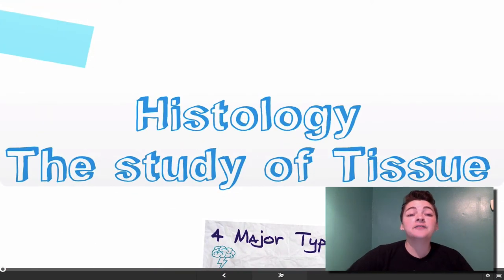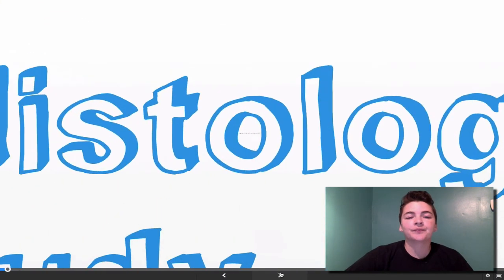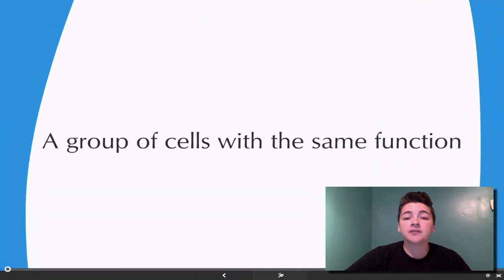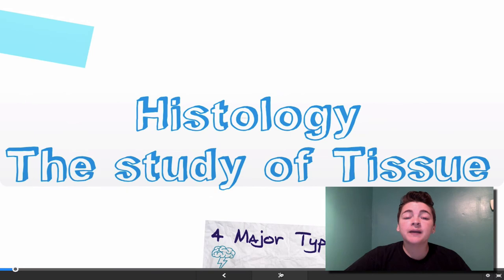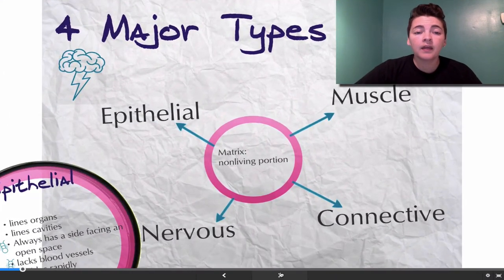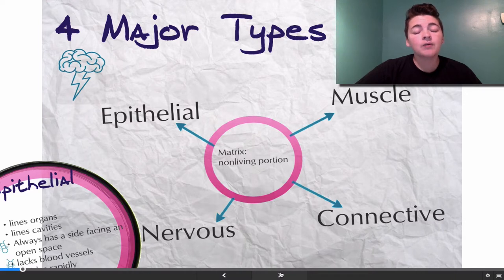Histology is the study of tissue. A tissue is a group of cells that have the same function, doing the same thing. There are four major types of tissue in your body: epithelial, muscle, connective, and nervous. We will go over each one of these individually, and there are several types of each of these tissues.